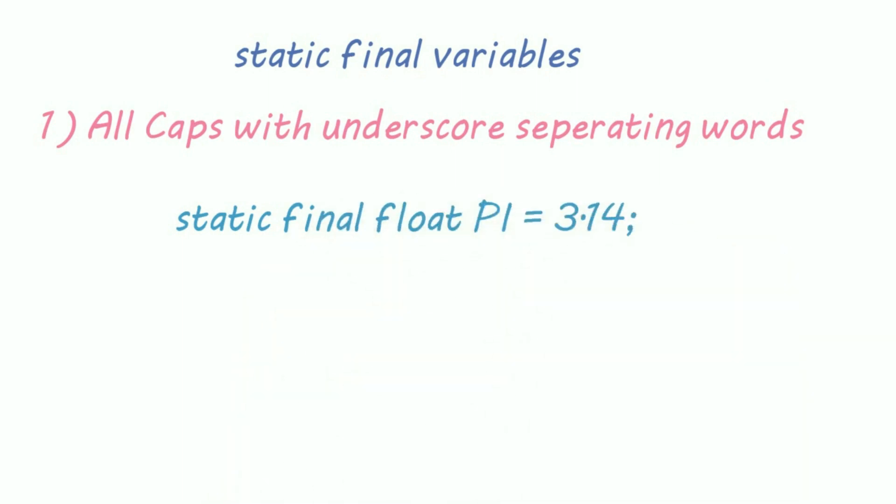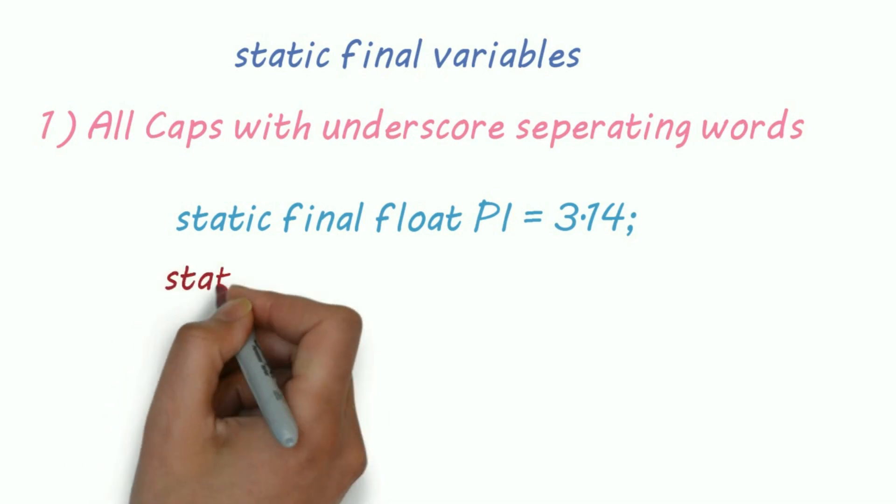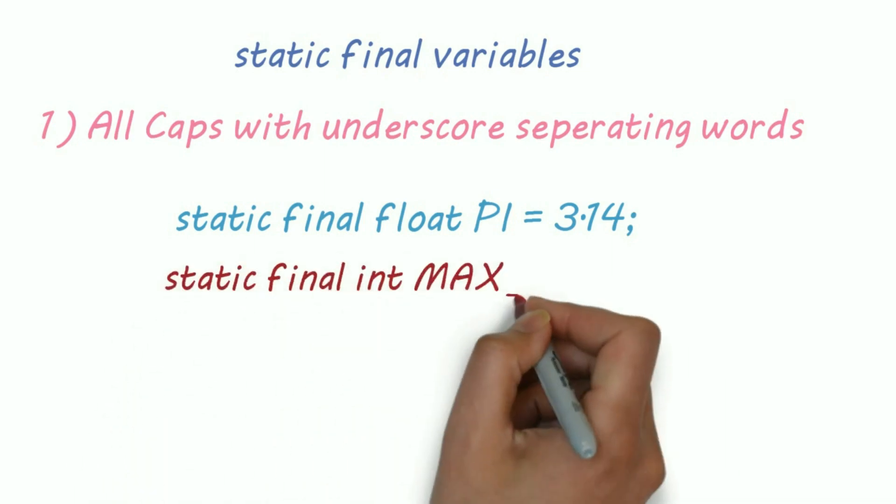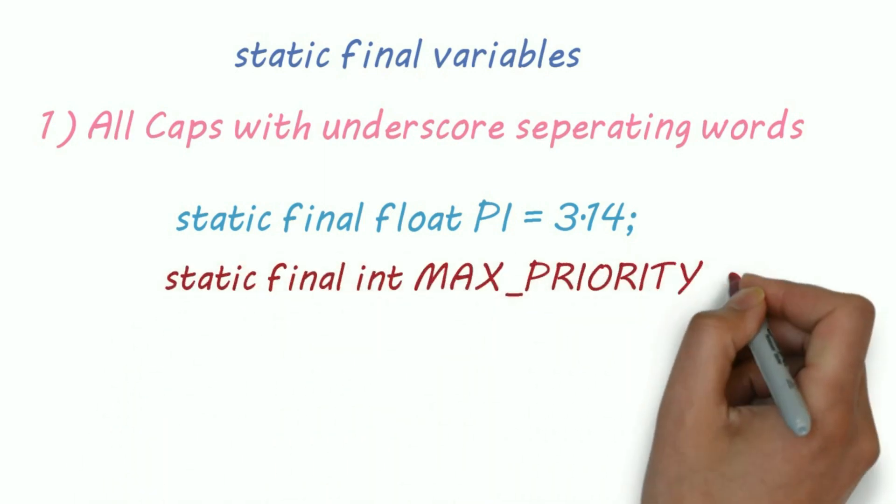For static final variables, they should be written in all caps with underscores separating words. For example, static final float PI, where PI is in capitals, or static final int MAX_PRIORITY.